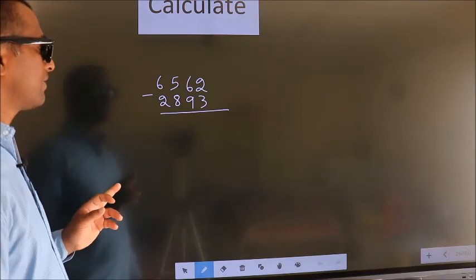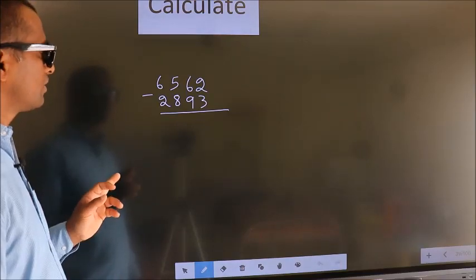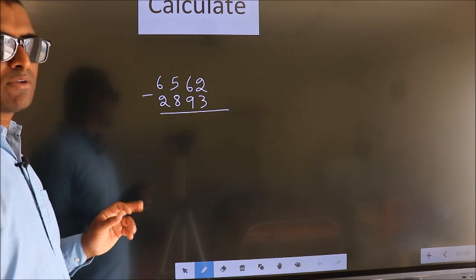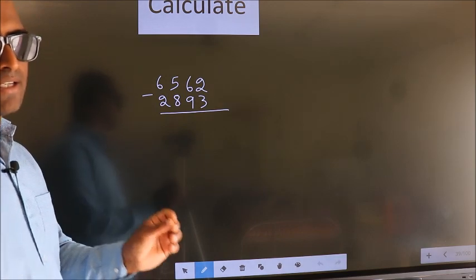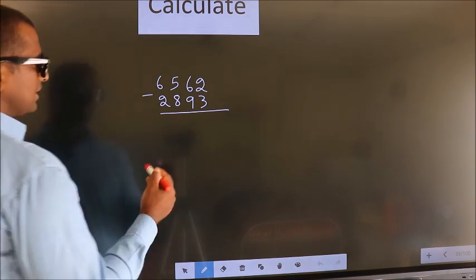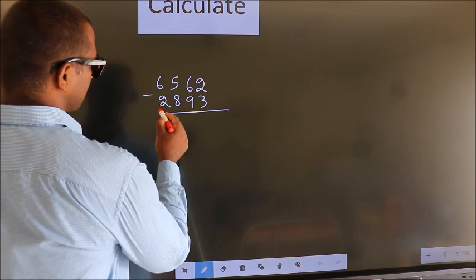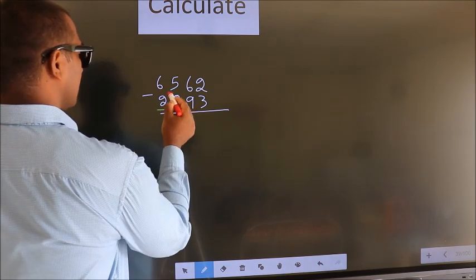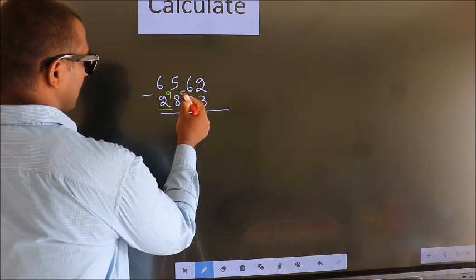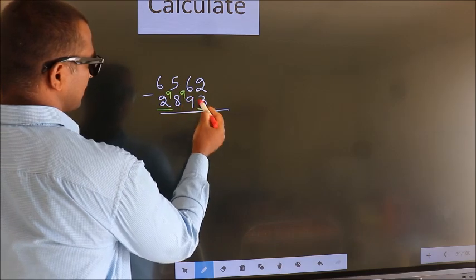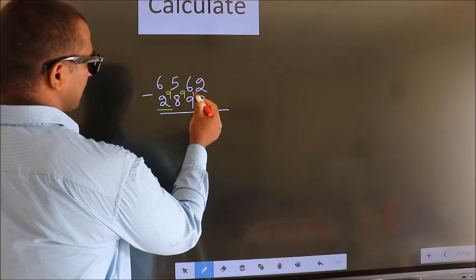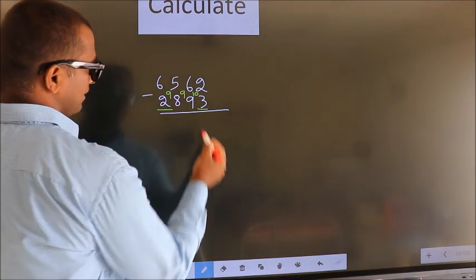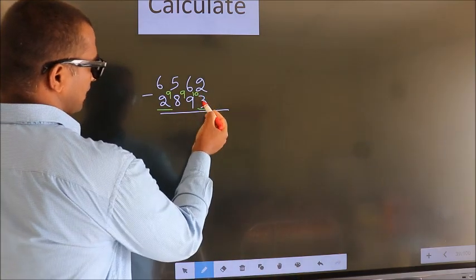Calculate 6562 minus 2893. How do we subtract it faster? See, we should leave the first digit, and here you write 9, here 9, and for the last digit you write 10. Now we subtract 10 minus 3.